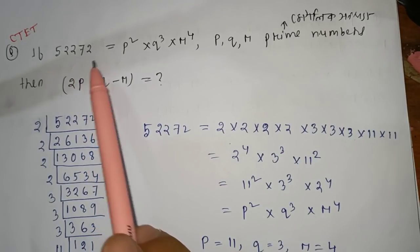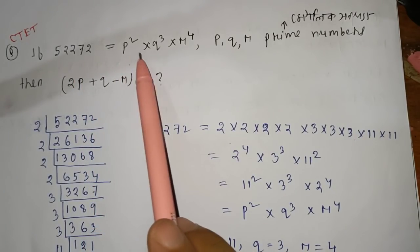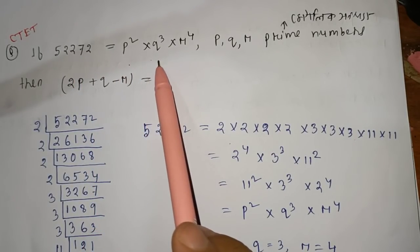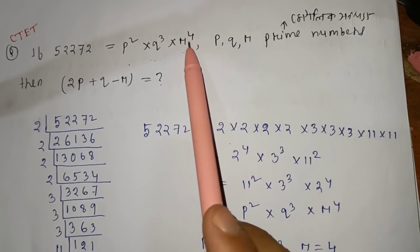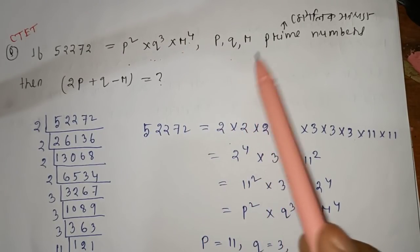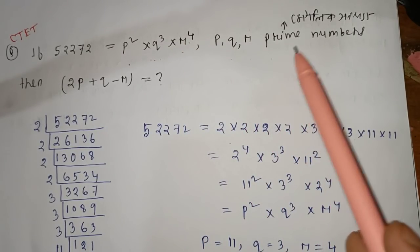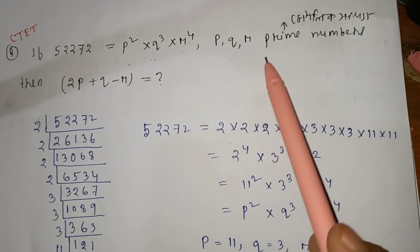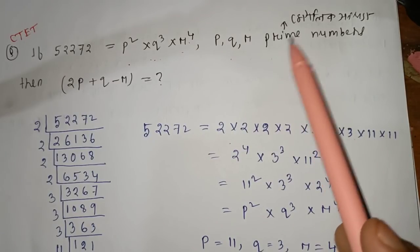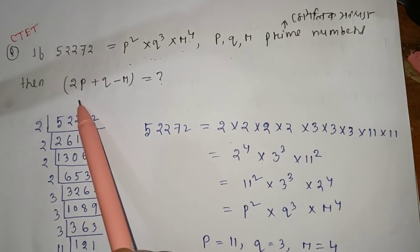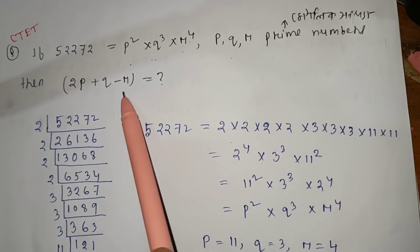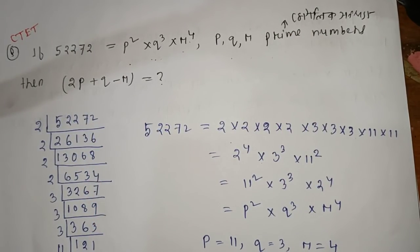The next question: if 52272 is equal to p square into q cube into r to the power 4, where p, q, r are prime numbers, then p, q, r is equal to what?